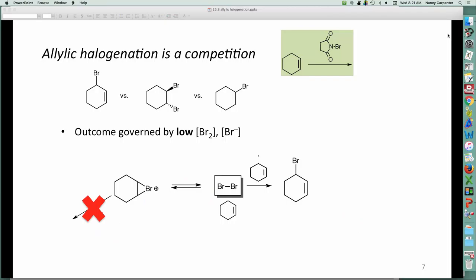So, keep in mind that the reason allylic halogenation works is because we use N-bromosuccinimide, which is what leads to a small, low concentration of Br2, and the rest is explained in that equilibrium.